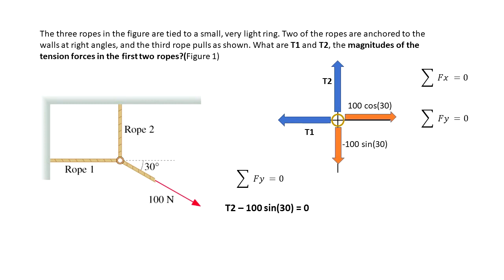I'm going to do the summation of the forces in the Y. So you see that in the Y direction we have T2 minus 100 sine of 30 that's equal to zero. I'm going to do some algebra, and we get that the magnitude of this force is equal to 50 newtons.